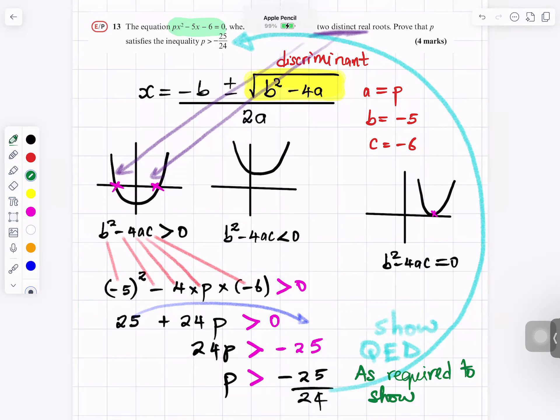So when you show it, you can write Q-E-D. Q-E-D is Latin, Quod erat demonstrandum. And in English, you can translate it as required to show. And you can see you're showing it by using logical steps. So if you write that down, then we can move on to the next one.